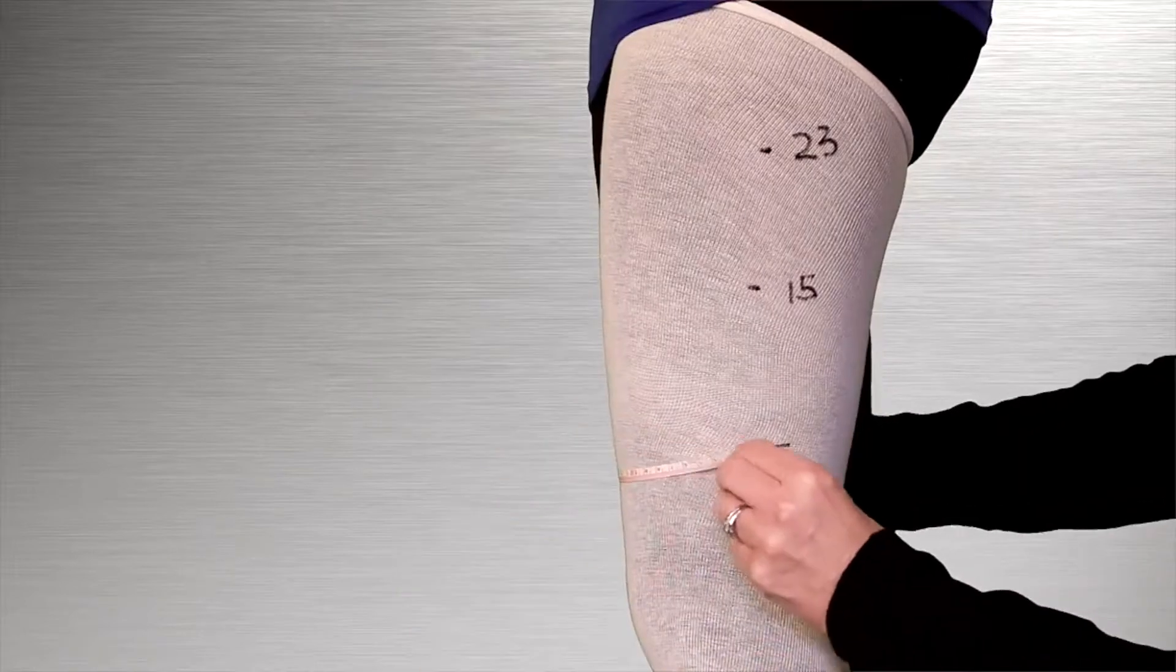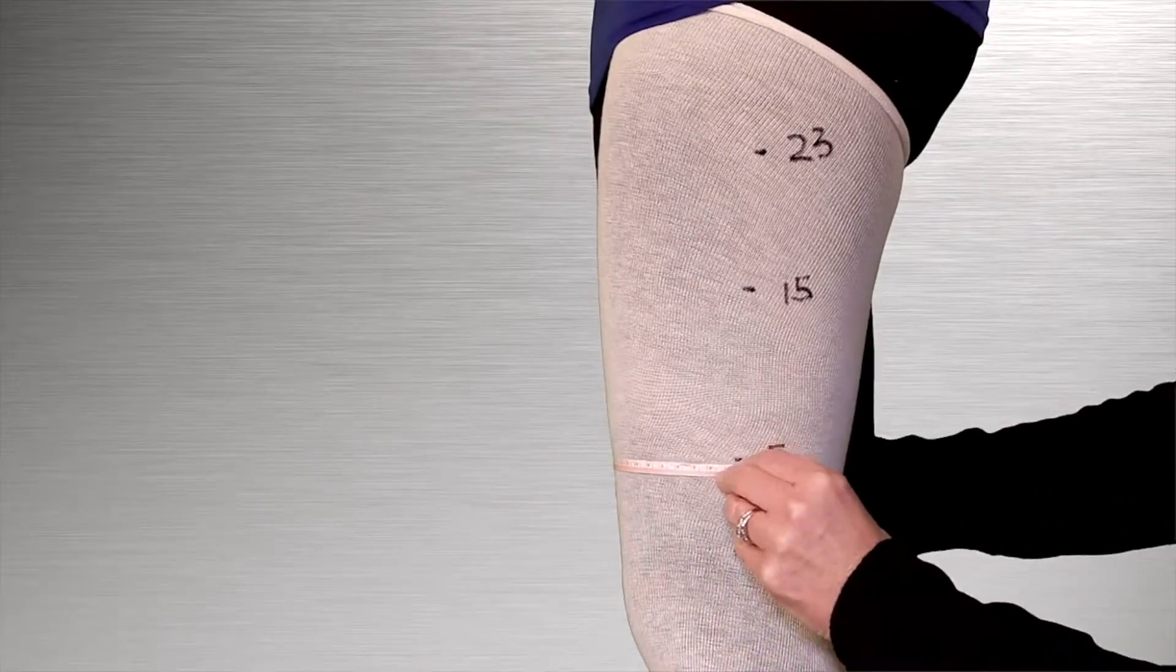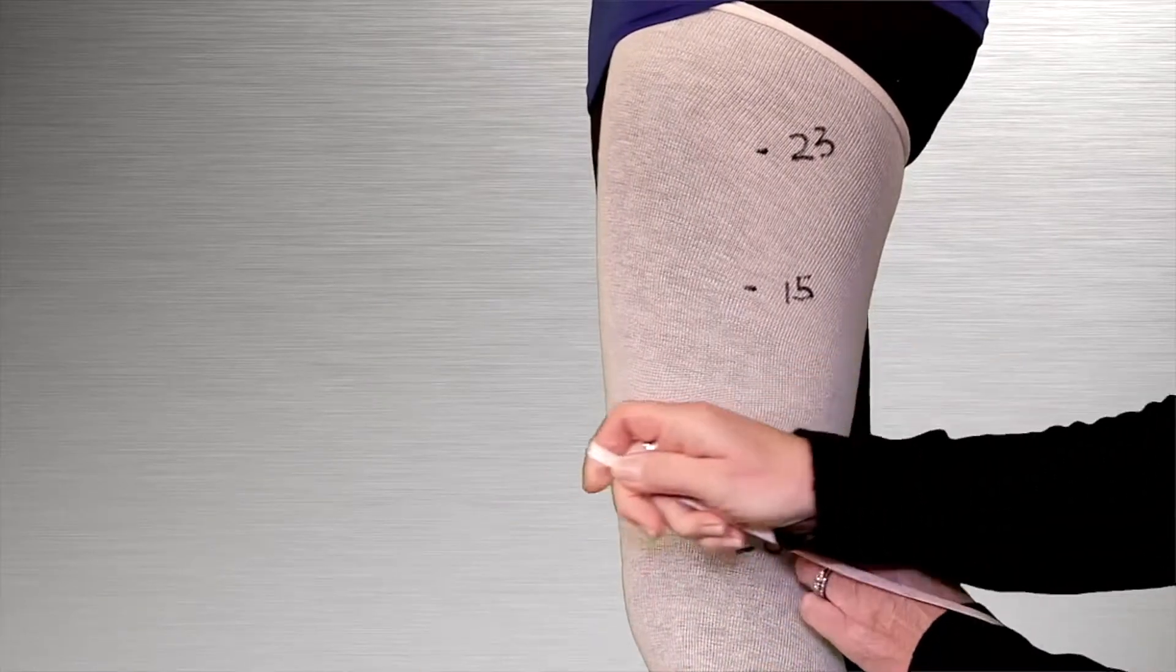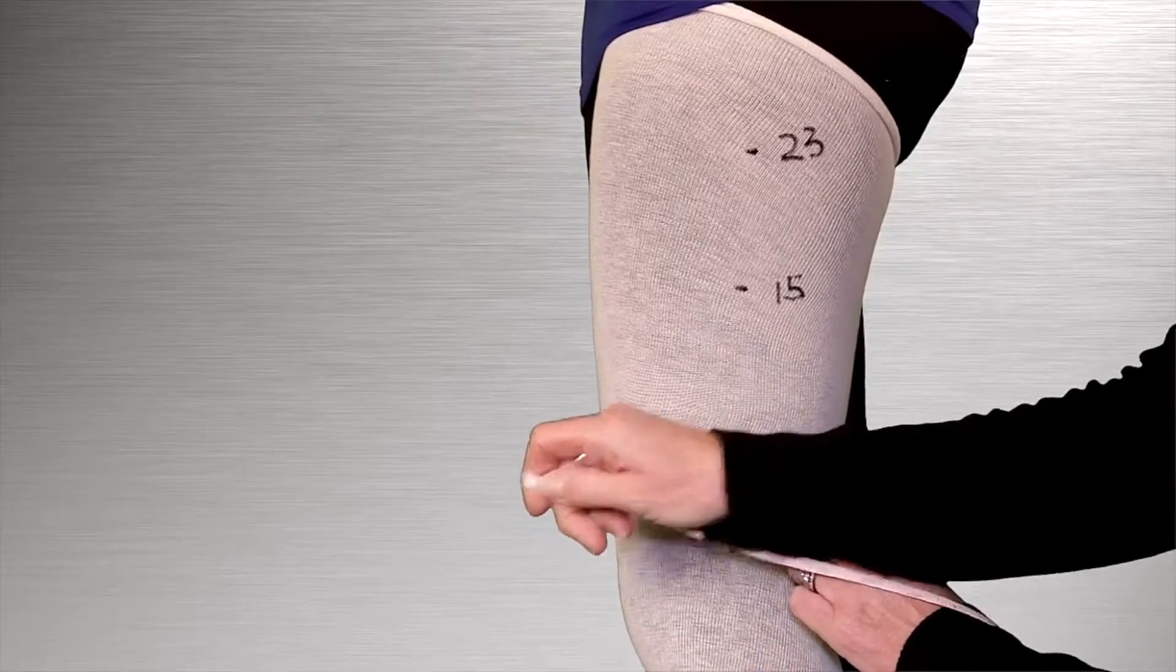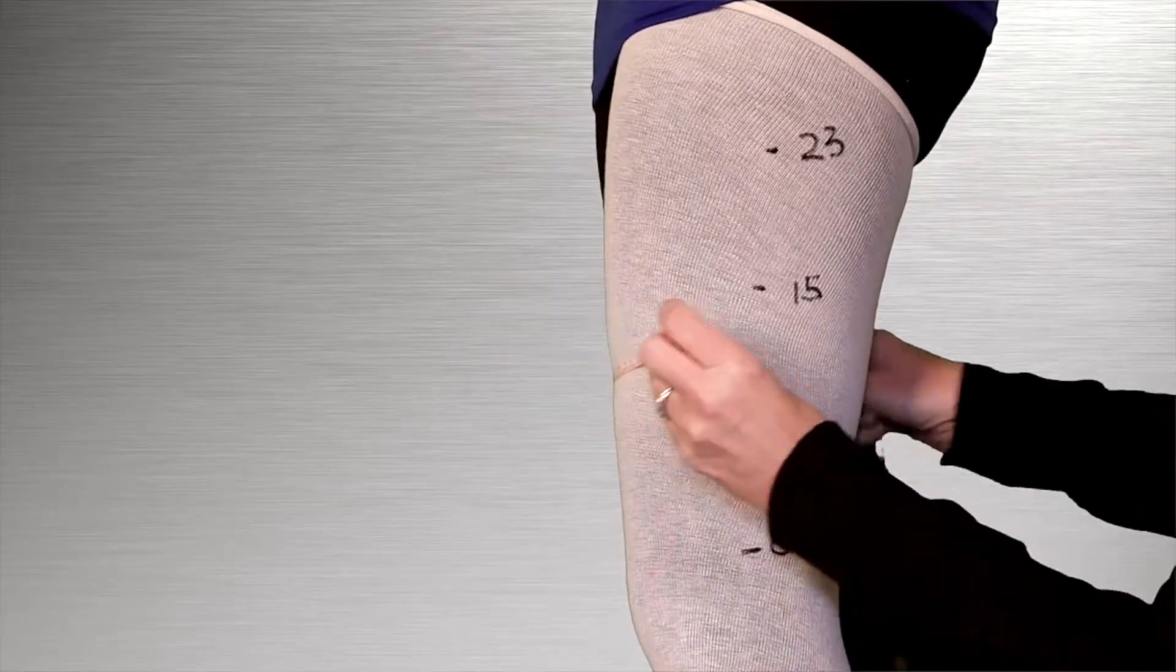Measure the circumference of the leg at the 5 centimeter location. As with all measurements, do not pull the tape tight. Apply just enough tension to keep the tape in contact with the skin.